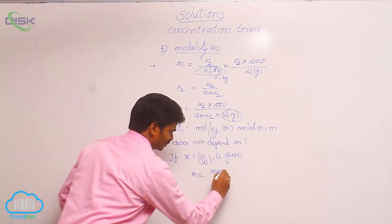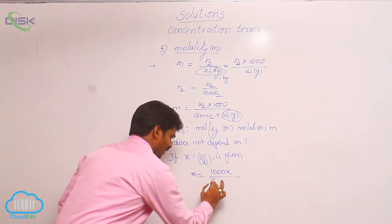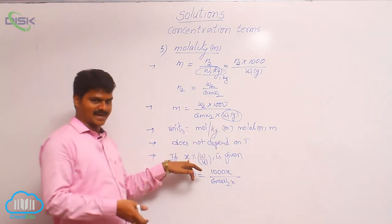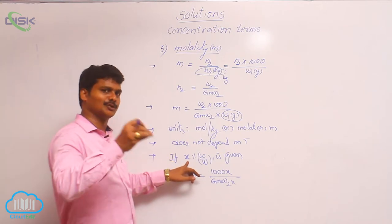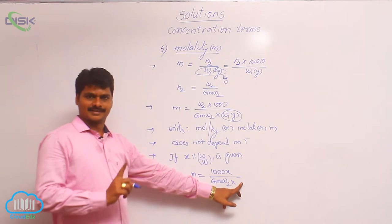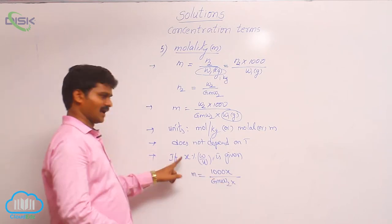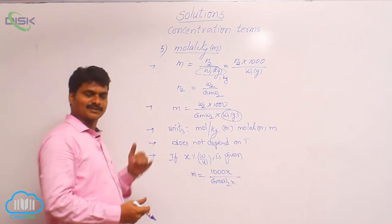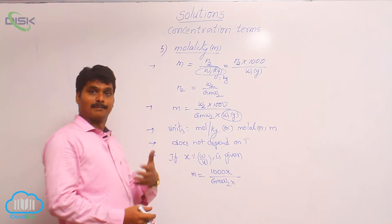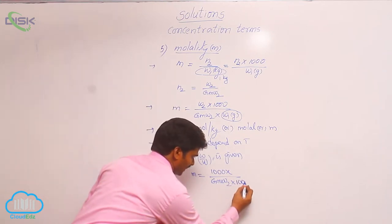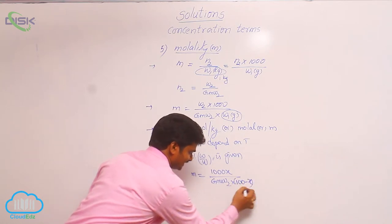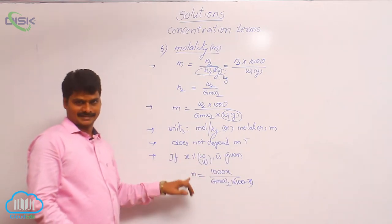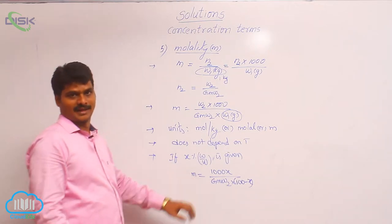Already 1000 is in the formula, so we write: m = 1000x / (gram molecular weight of solute × (100 − x)). Here, 100 is the mass of solution and x is the mass of solute. Mass of solvent = mass of solution − mass of solute = 100 − x. If percentage W/W is given, this is the formula to calculate molality.